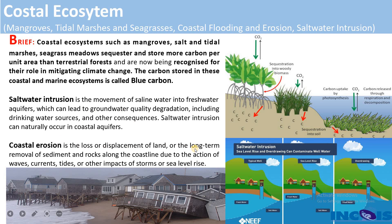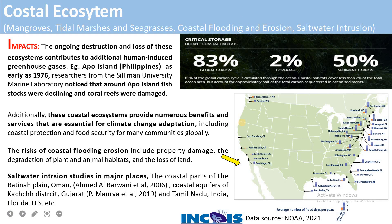Coastal erosion is the loss or displacement of land from beaches because of the action of waves, currents, tides, storms, or sea level rise along the coast. So these are the main concepts we are going to cover in the coastal ecosystem: mangroves, tidal marshes, seagrass, coastline, and salt water intrusion.